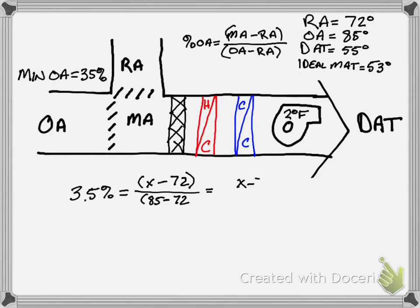So we know X minus 72 over 13 is what we're at. We need to multiply 13 by both sides. So 35% times 13 is 4.55, so 4.55 equals X minus 72. We then add 72 to both sides.